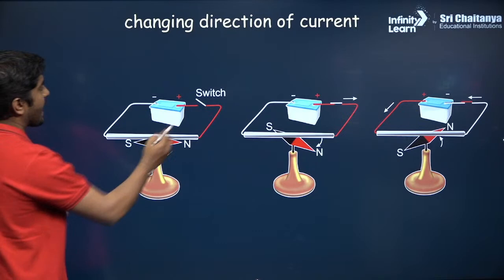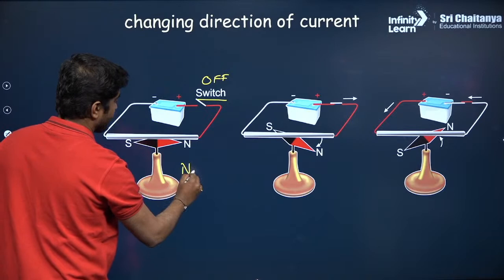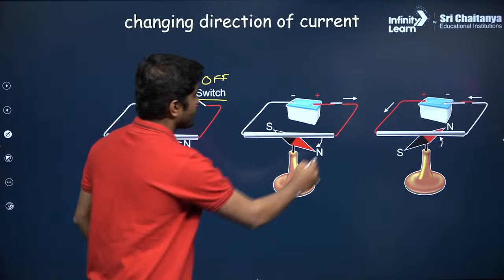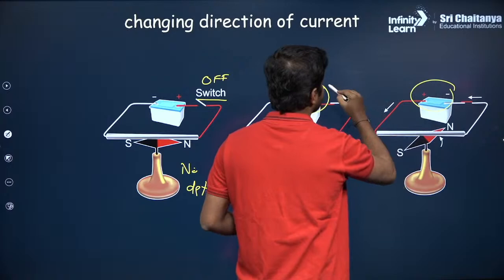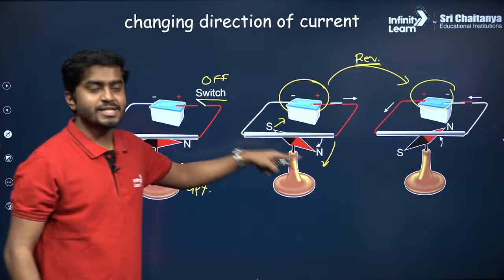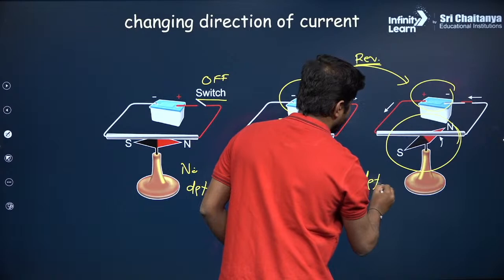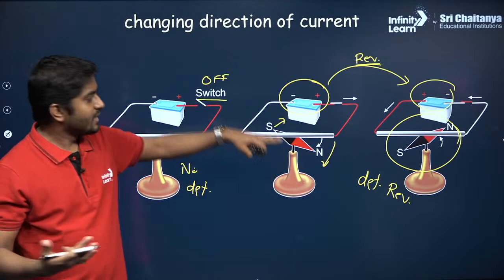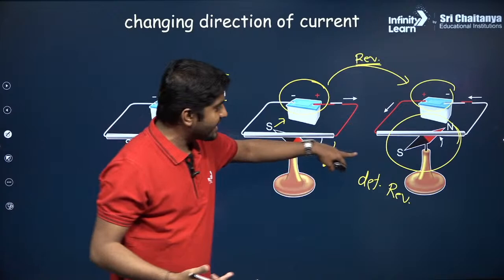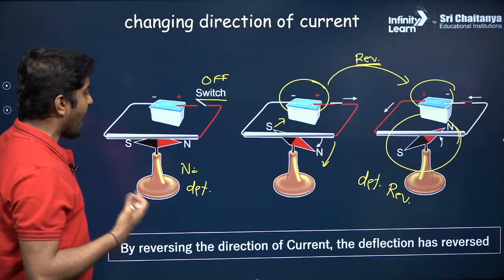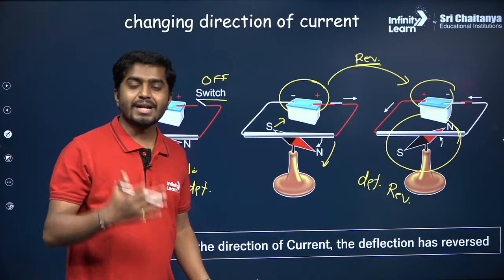When the switch is off, there is no deflection. When the switch is on, the north pole is repelled and south pole is attracted. If you reverse the battery, the deflection reverses. This means reversing the direction of current reverses the magnetic field produced by the conductor. Whenever you change the direction of current, the magnetic field direction gets reversed.